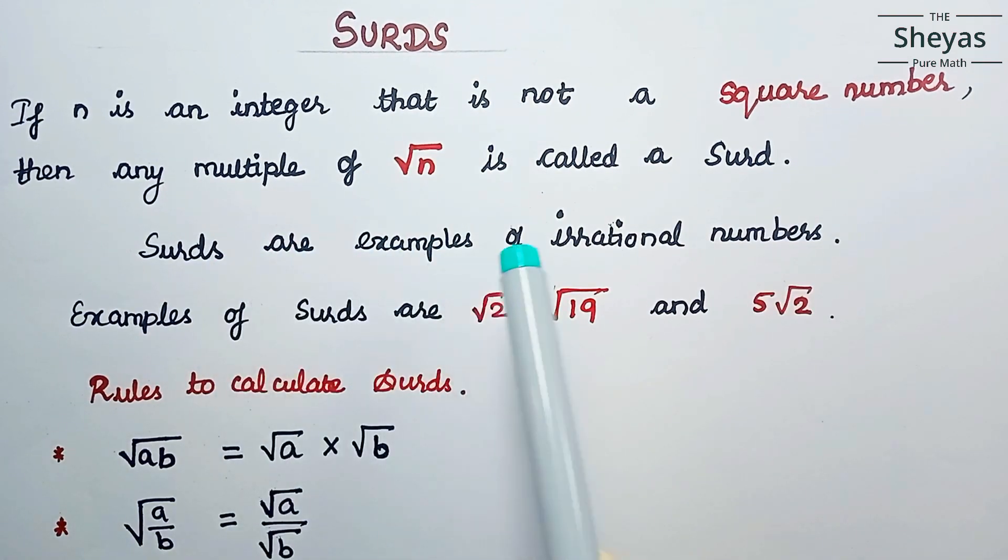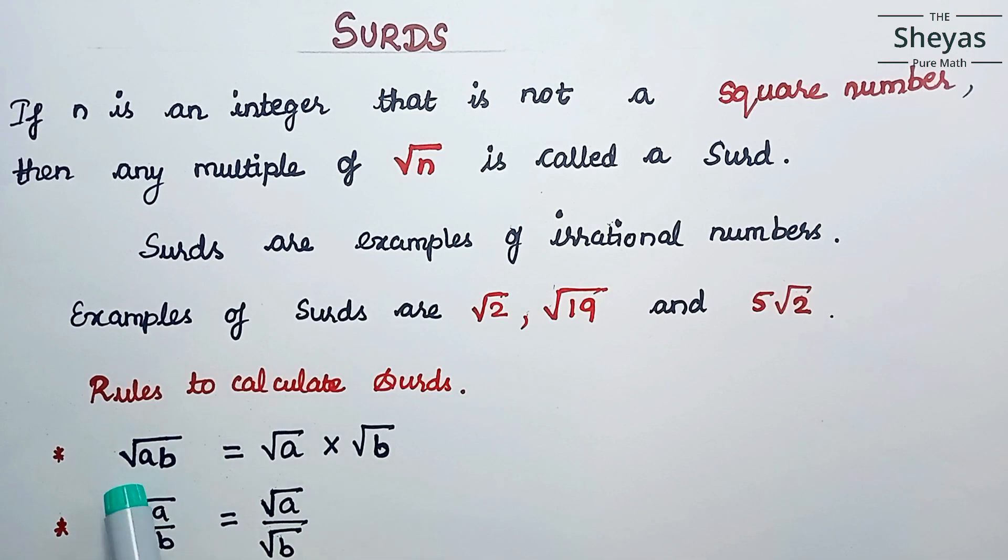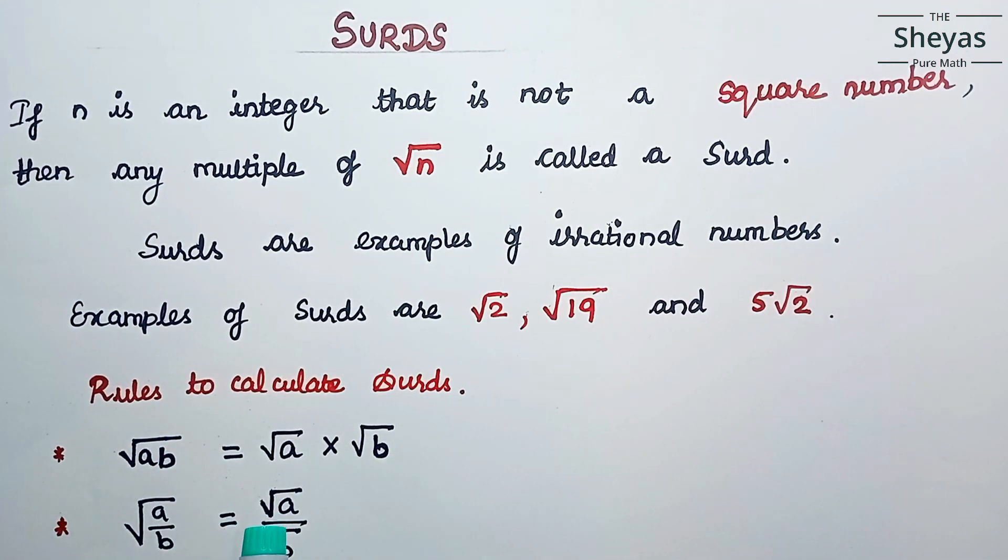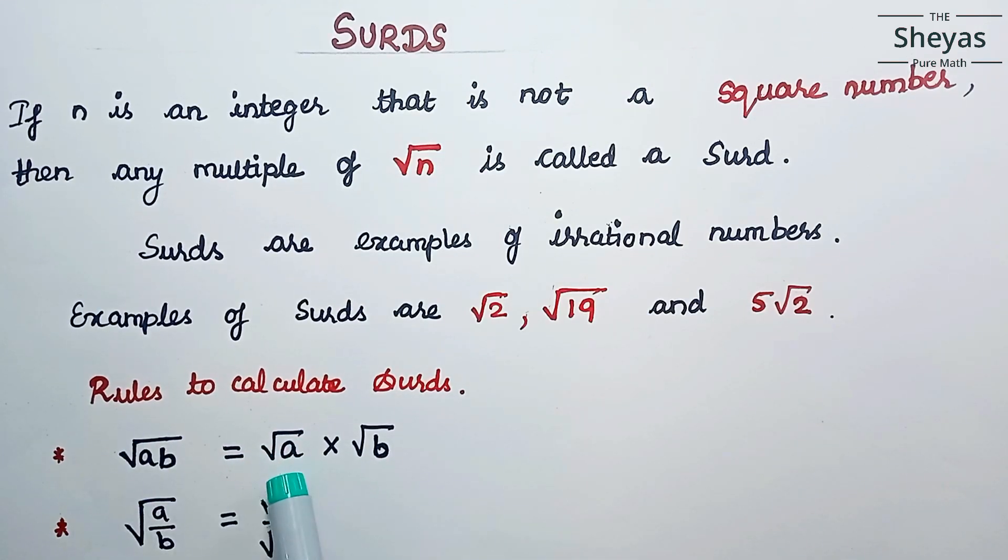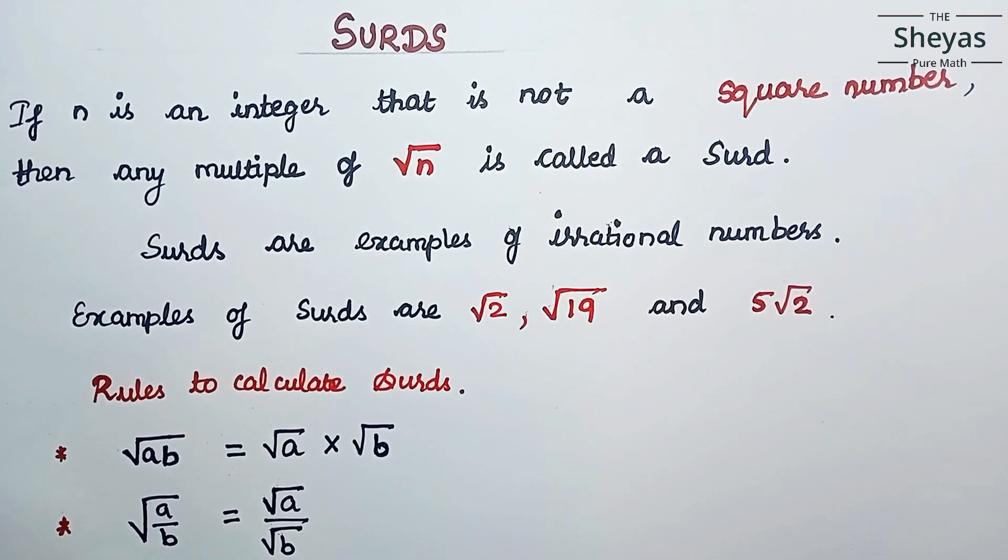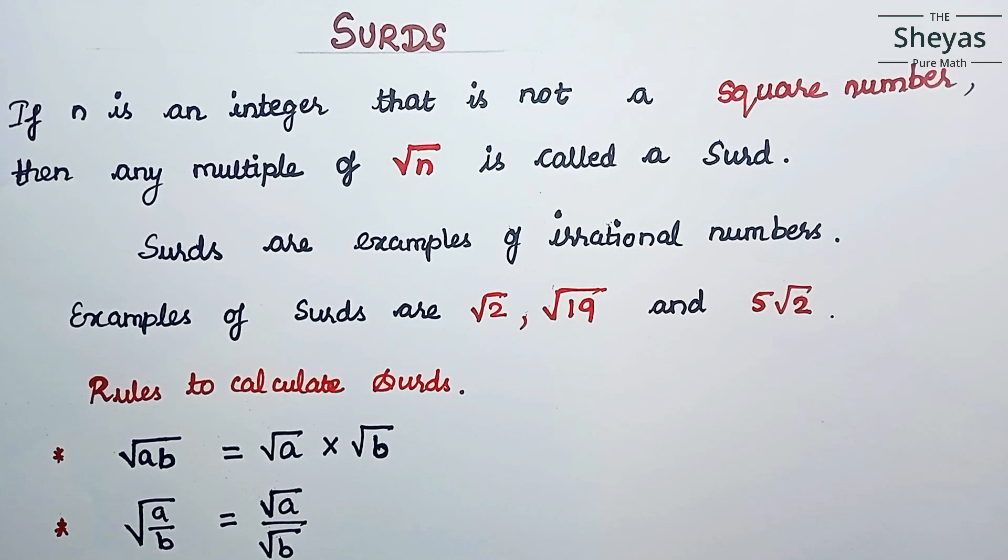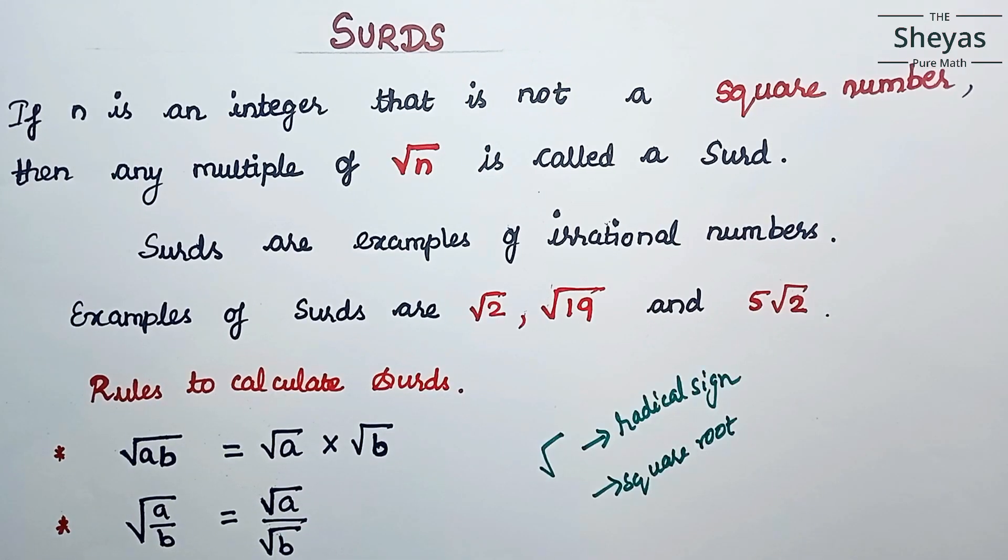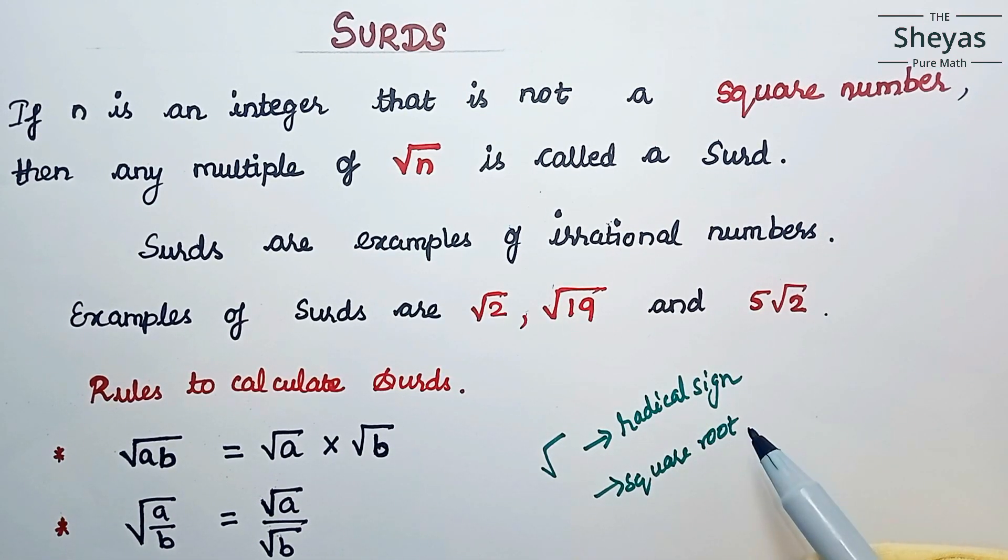Surds are examples of irrational numbers. Now let us see some of the rules to calculate surds. Root ab, that is radical ab, is equal to radical a times radical b. Square root a by b is equal to square root a by square root b. This sign can be called the radical sign, square root, or simply root.